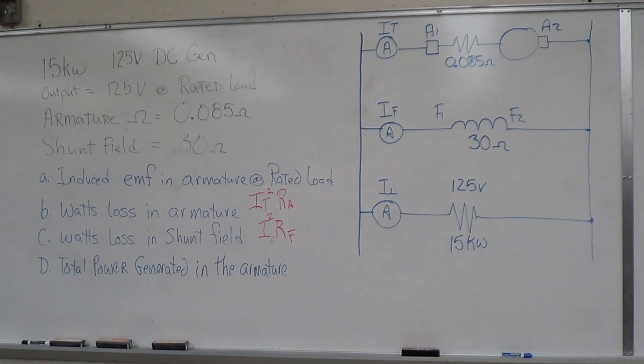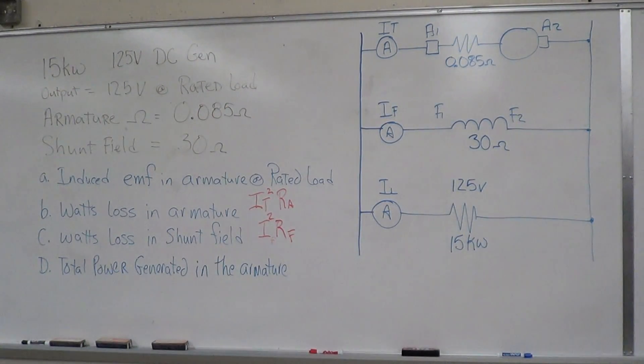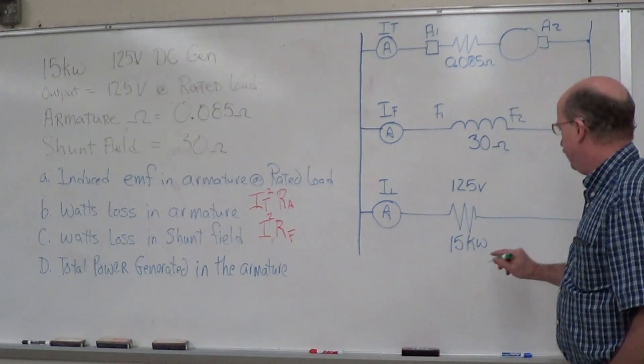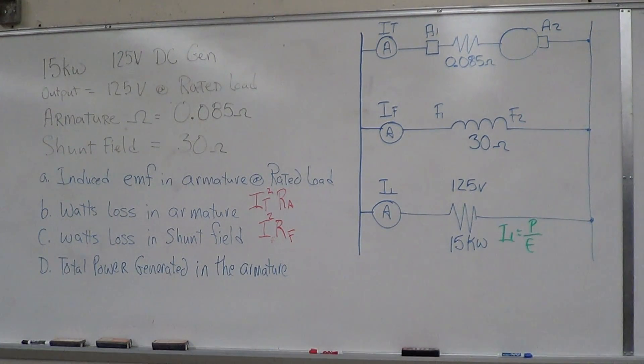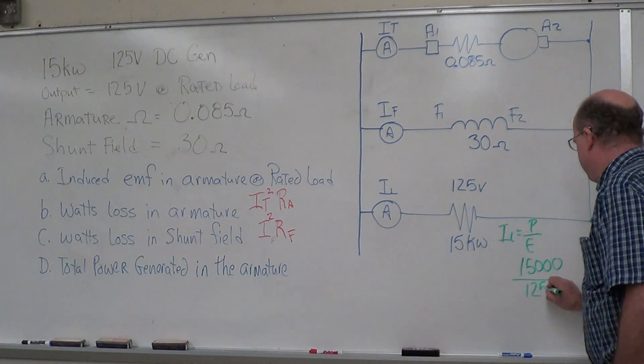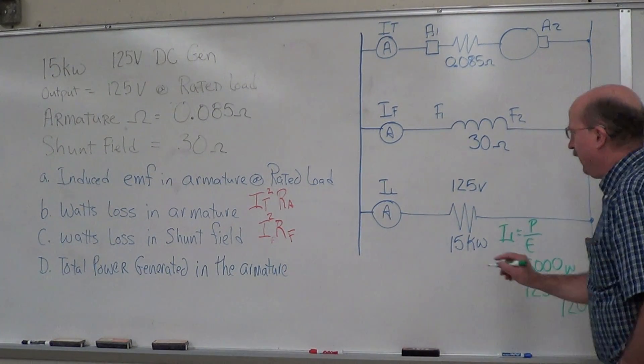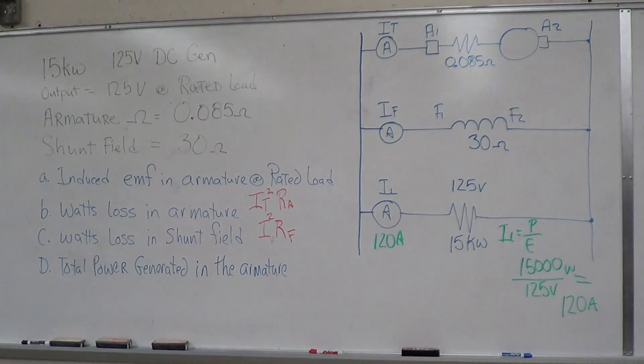Now let's work from the bottom up and talk about our currents. We've got 15 kilowatts, 125 volts. IL is going to be P over E, so 15,000 divided by 125, which gives us 120 amps.